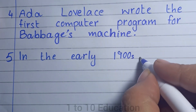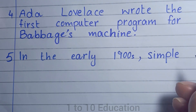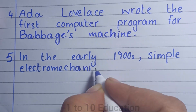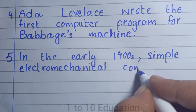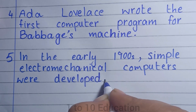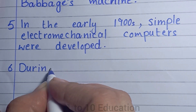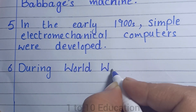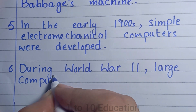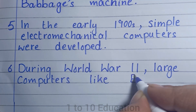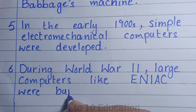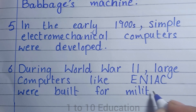Number 5: Simple electromechanical computers were developed. Number 6: Large computers like ENIAC were built for military use.